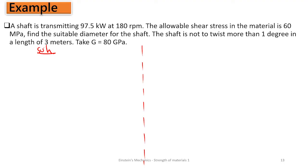Let's write down our parameters from the question. Power P is 97.5 kilowatts at 180 rpm. That is our N, number of rotations per minute, 180 rpm.